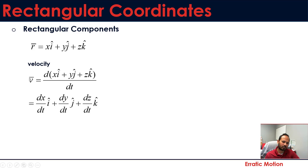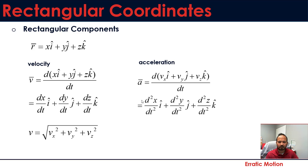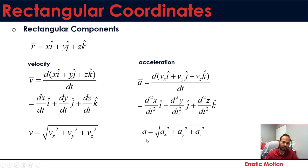The magnitude of the velocity is the square root of the sum of squares of each component: vx = dx/dt, vy = dy/dt, vz = dz/dt. Similarly, for acceleration, you take the second derivative of position or the first derivative of velocity to get ax, ay, and az. The magnitude of acceleration is found by squaring each term, summing them, and taking the square root.